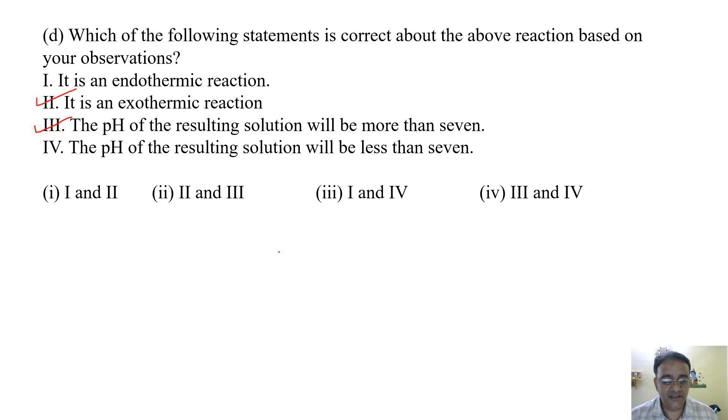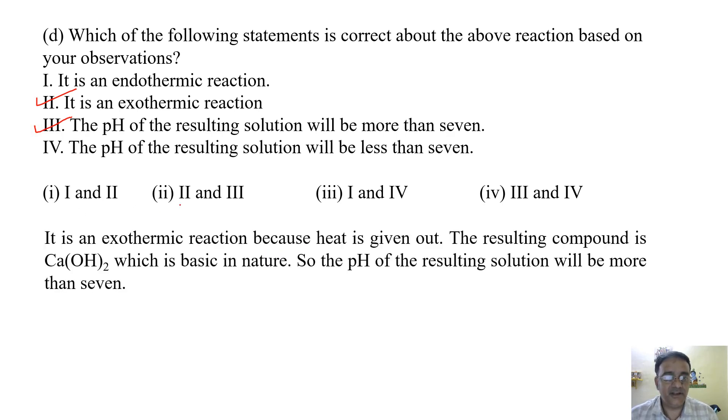Second and third, this one is correct. The explanation is: it is an exothermic reaction because heat is given out. The resulting compound is calcium hydroxide which is basic in nature. So the pH of the resulting solution will be more than 7. The correct option is second and third.